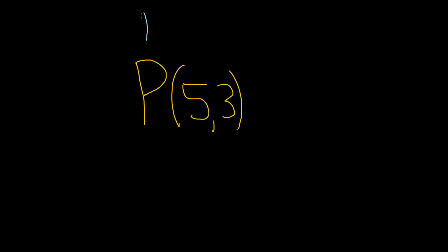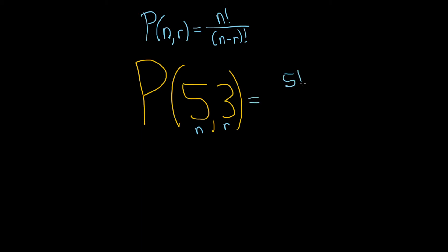There's a formula for this. P of n, r is equal to n factorial divided by parentheses n minus r factorial. So in our problem here, the n is 5 and the r is 3. So this is equal to 5 factorial divided by parentheses 5 minus 3, and then it's factorial.